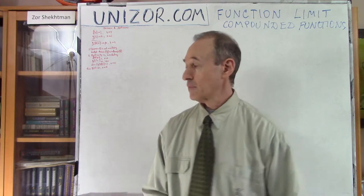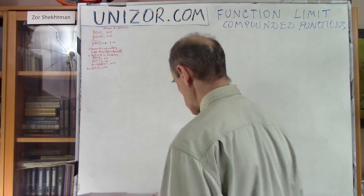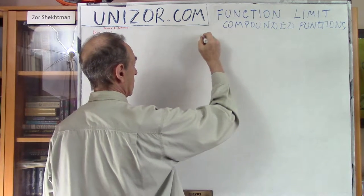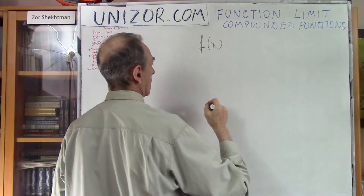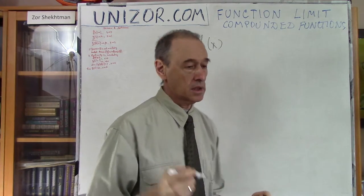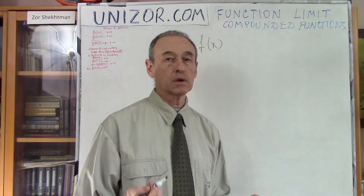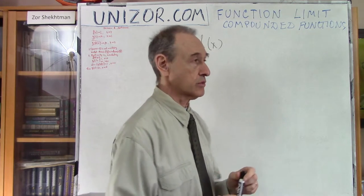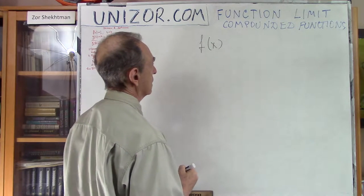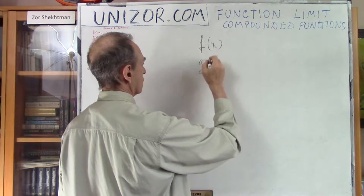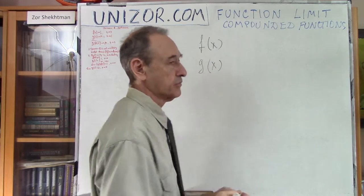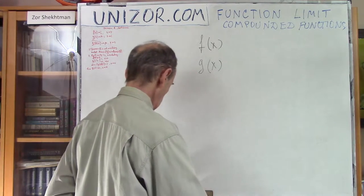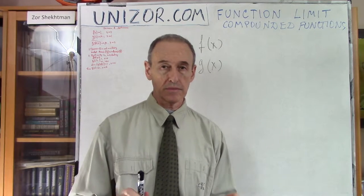So we are talking about compound functions. Let's assume that we have two functions: function f, which is defined for all real values x — its domain is all real x — and another function g of x, which is also defined for all real argument x. Now let's assume that both functions are continuous. That's important.